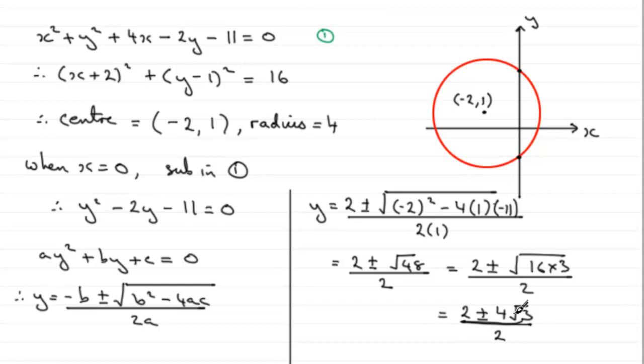And we can divide 2 into both of these terms on the top. If we do that, we're going to get 1 plus or minus 2 root 3. Just divide then 2 into both those two terms.